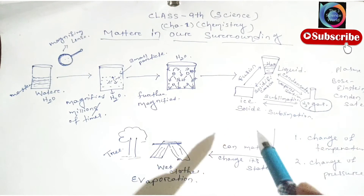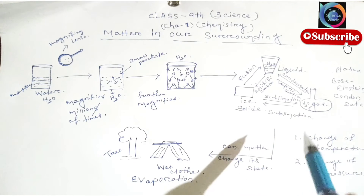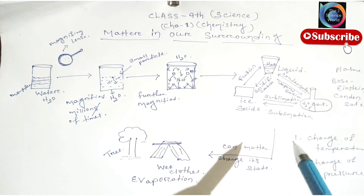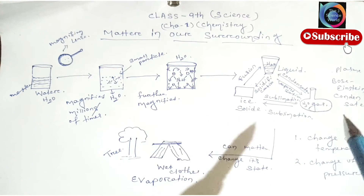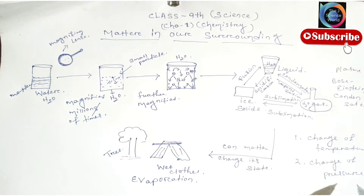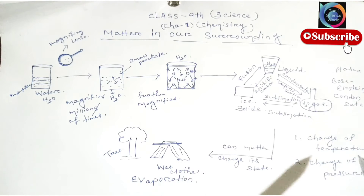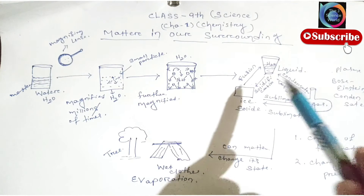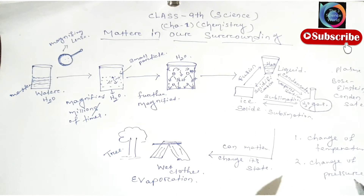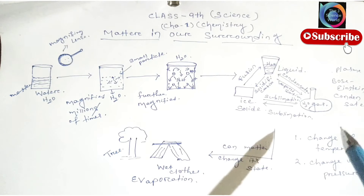The fifth term related to this topic is: can matter change its state? Yes, matter changes state. If we change the temperature, the matter can interchange with each other. If we change its pressure — increase or decrease — then matter can interchange its state, such as ice to water and water to gas.